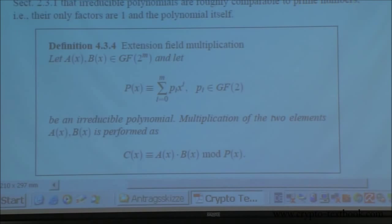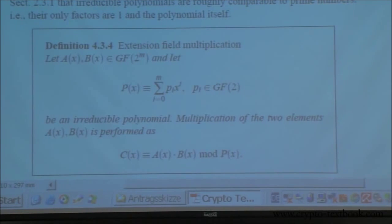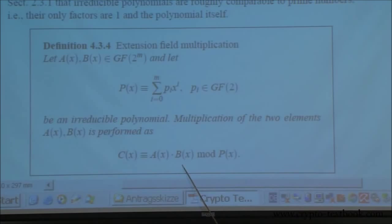The formal definition is: to multiply a times B, the first thing you need is P of x, an irreducible polynomial — similar to a prime field where you need p equals 7. Otherwise you cannot do the calculation. Once you have that, you do a times B as before, and then you also do modular reduction, which is what we're going to do now.